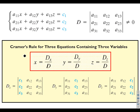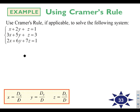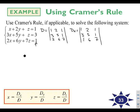We can do this by hand, but let me show you how using the calculator. Writing out all the determinants first: D is all coefficients — 1, 2, 1, 3, 5, 1, 2, 6, 7. DX replaces the first column with the solution column 1, 3, 1, giving 1, 2, 1, 3, 5, 1, 1, 6, 7. DY keeps the first and third columns but replaces the middle with 1, 3, 1. DZ keeps the first two columns but replaces the last column with 1, 3, 1.